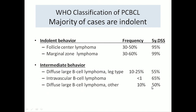How does the WHO classify primary cutaneous B-cell lymphoma? The majority are going to be indolent, low-grade — follicle center lymphoma and marginal zone lymphoma — with big confusion between those two, and small percentages of diffuse large cell, intravascular lymphomas, and other subtypes.